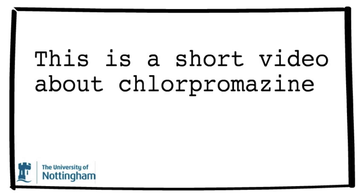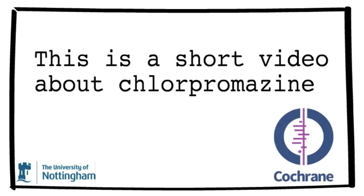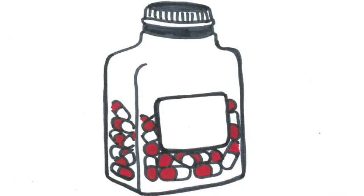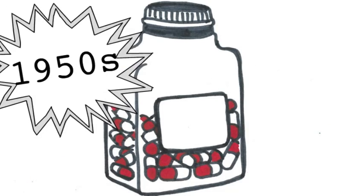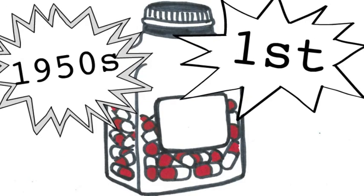This is a short video about chlorpromazine for the Cochrane Schizophrenia Group. Chlorpromazine is a medicine used in schizophrenia. It was developed in the 1950s and it was the first drug of its kind.